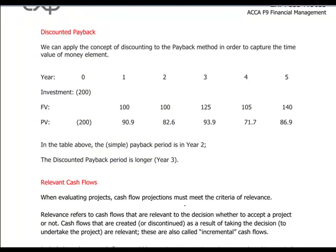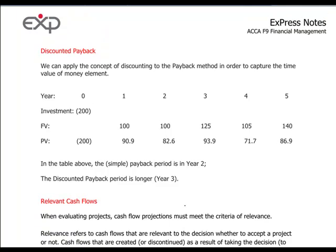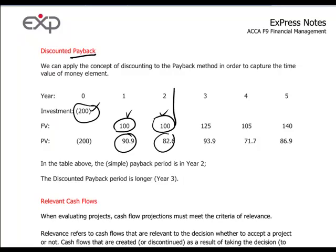Let us revisit the payback method briefly and apply a discounting treatment to the cash flows. The simple payback method would balance cash flows at their future values against the initial investment — in this case exactly two years to recover $200, by adding the two hundreds together. With discounted payback we discount the future cash flows, so we must travel further along the timeline and take into account some portion of the year three cash flows, since we are accumulating present values.